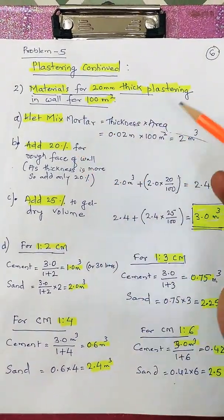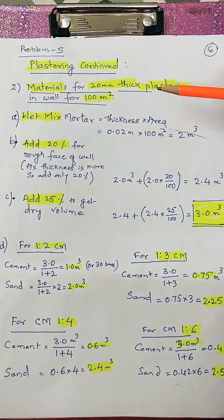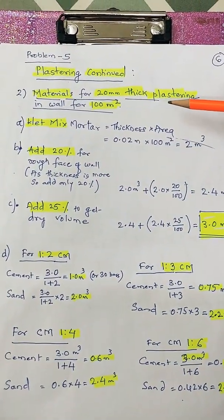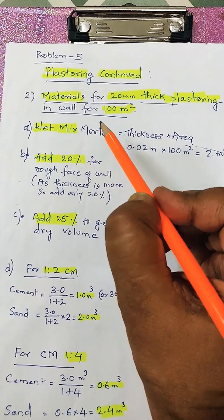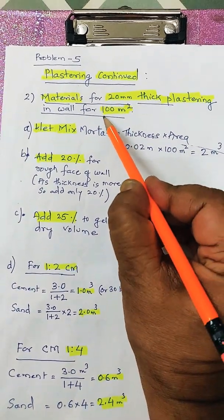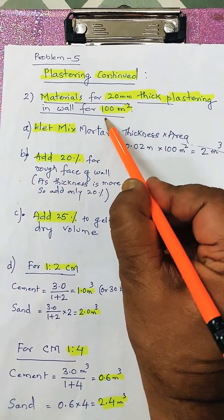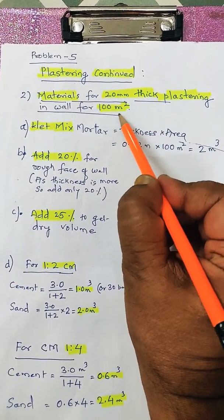So how do we calculate the materials required for outside plastering? Let us consider 100 square meters of wall.